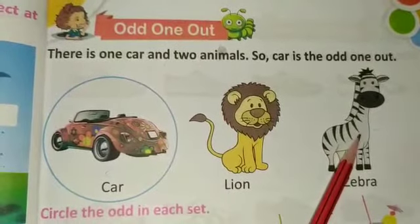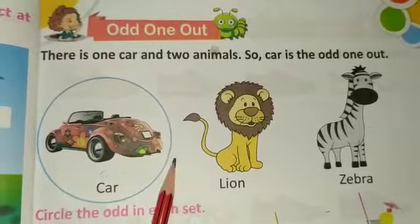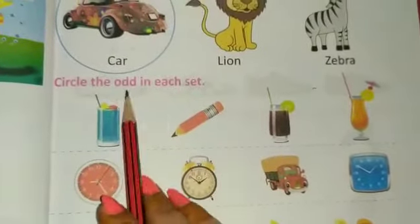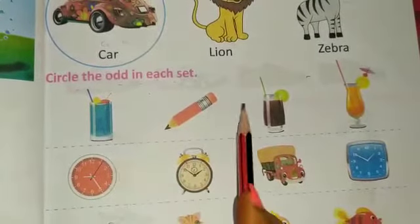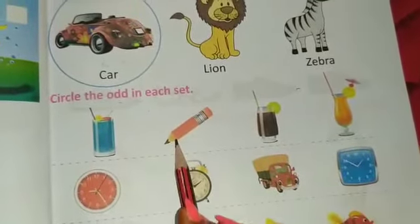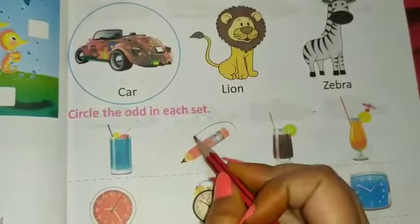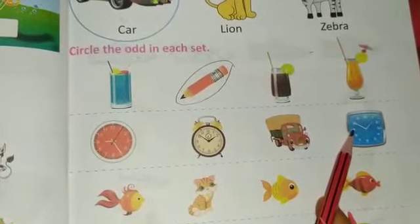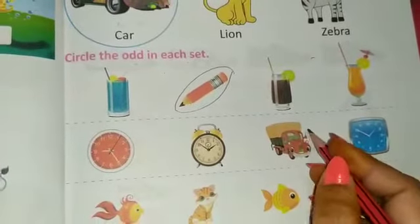We need to circle the odd one in each set. Look at the first set — there are some glasses: one, two, three. But there is only one pencil. So we need to circle which is the odd one — one pencil, like this. Next one: there are three clocks, but only one truck. There is only one truck, so circle the truck.